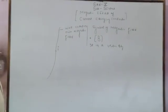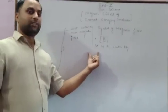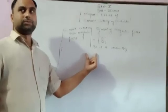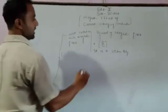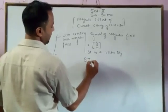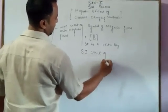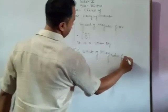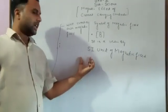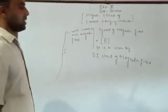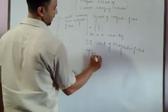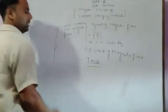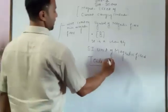The SI unit of magnetic field is frequently asked in questions. At the Class 10 level, we need to remember that the SI unit of magnetic field is Tesla, represented as T.